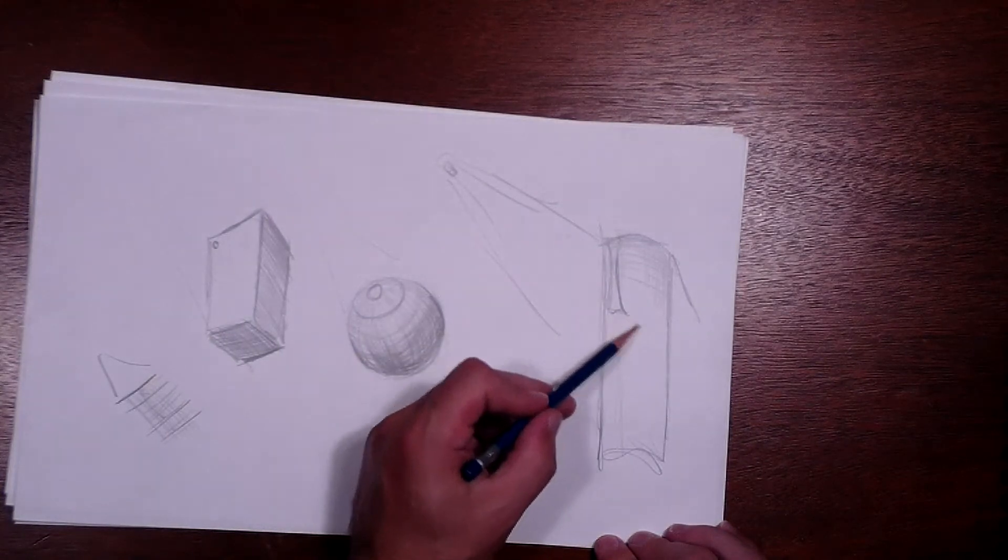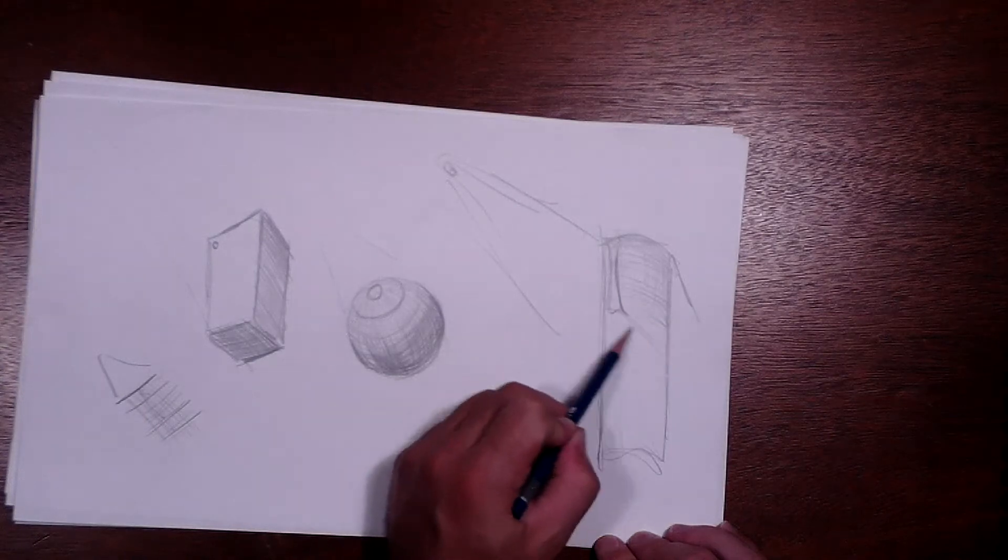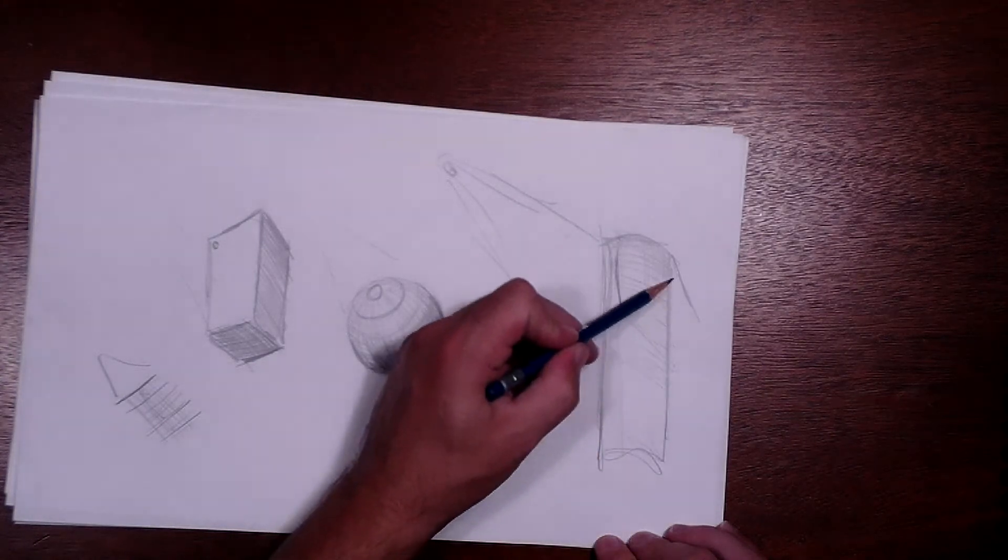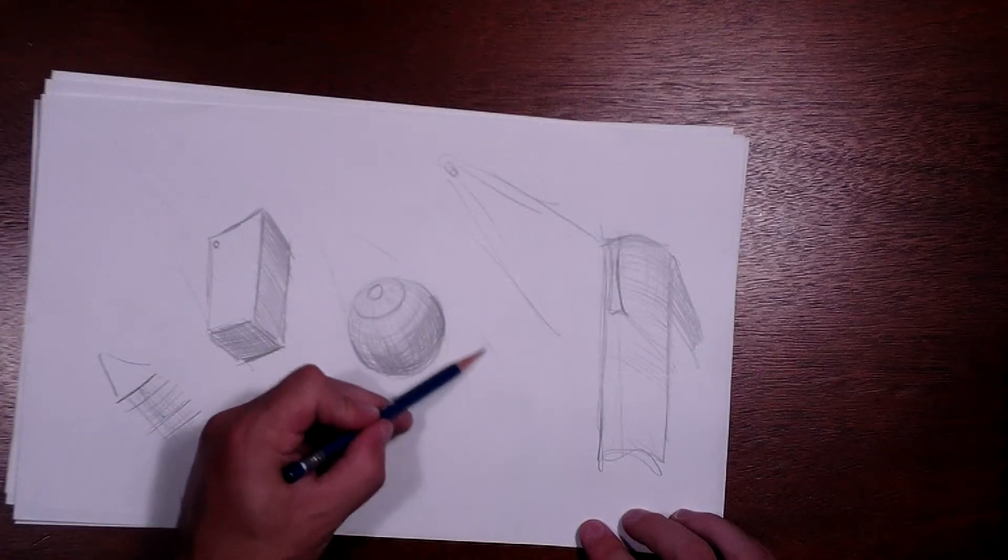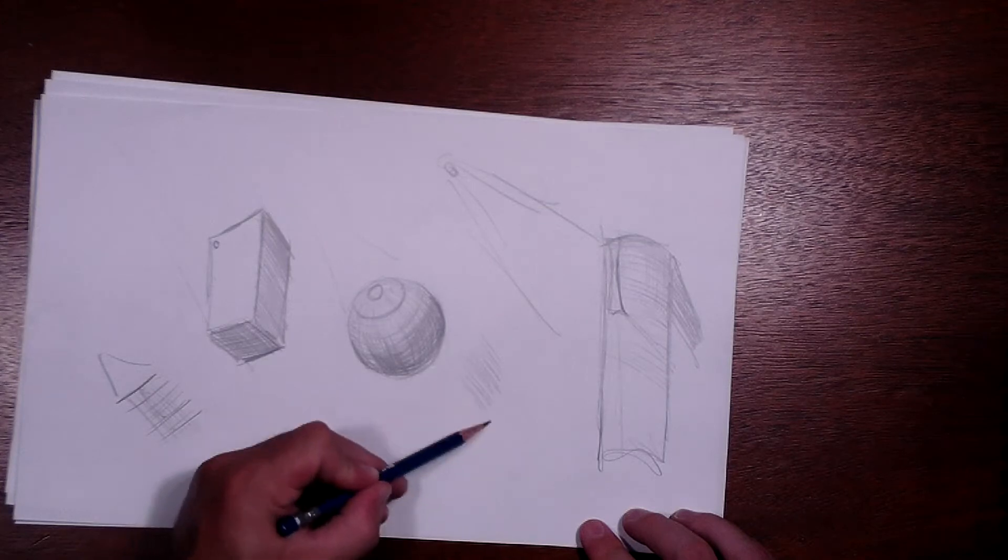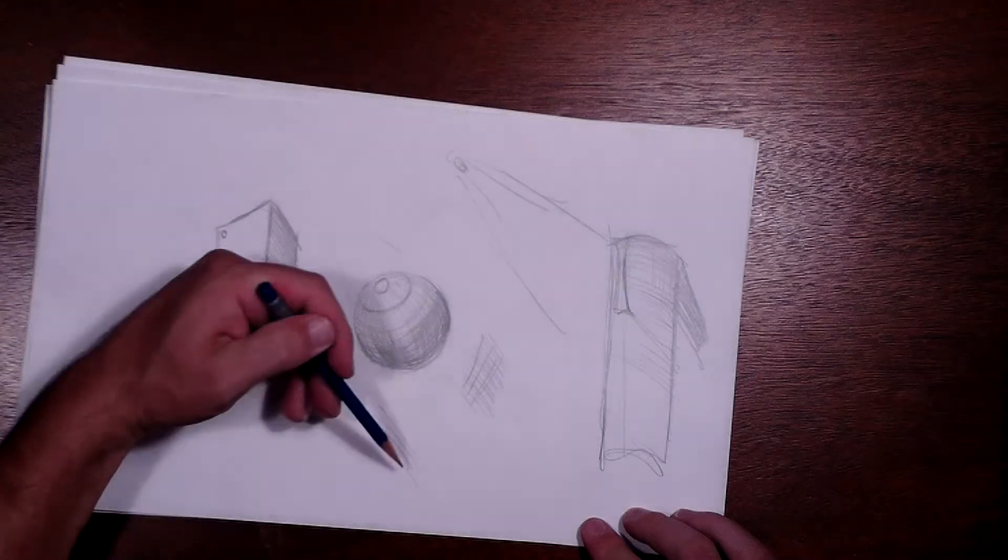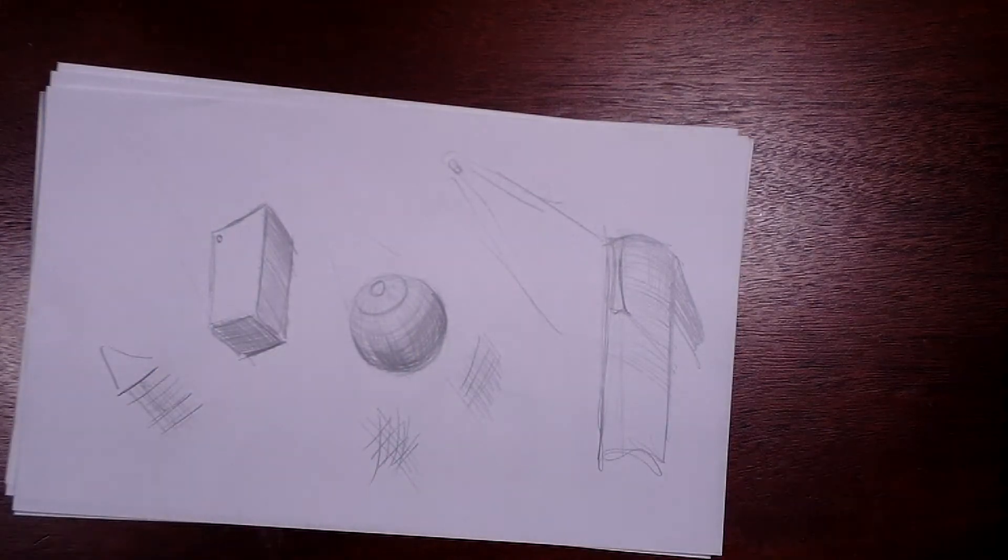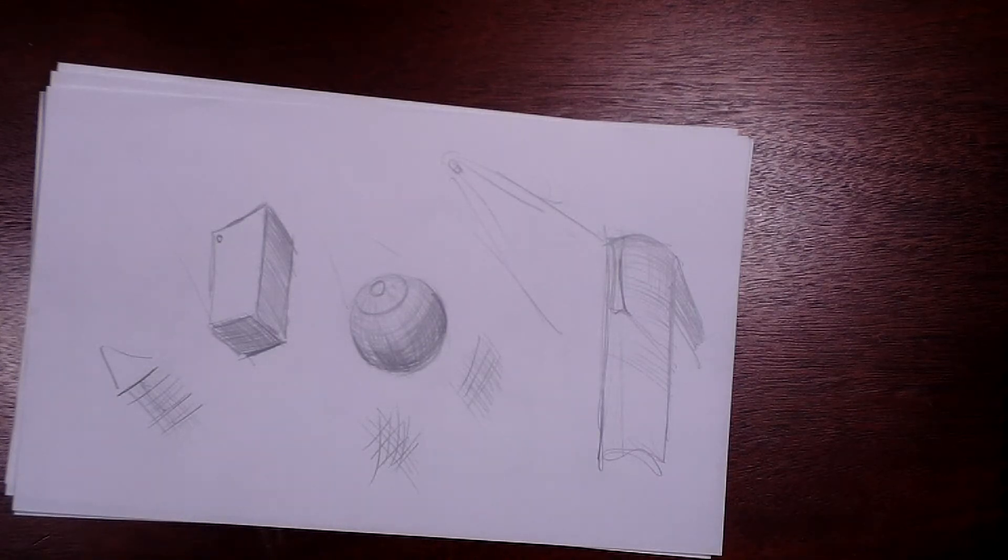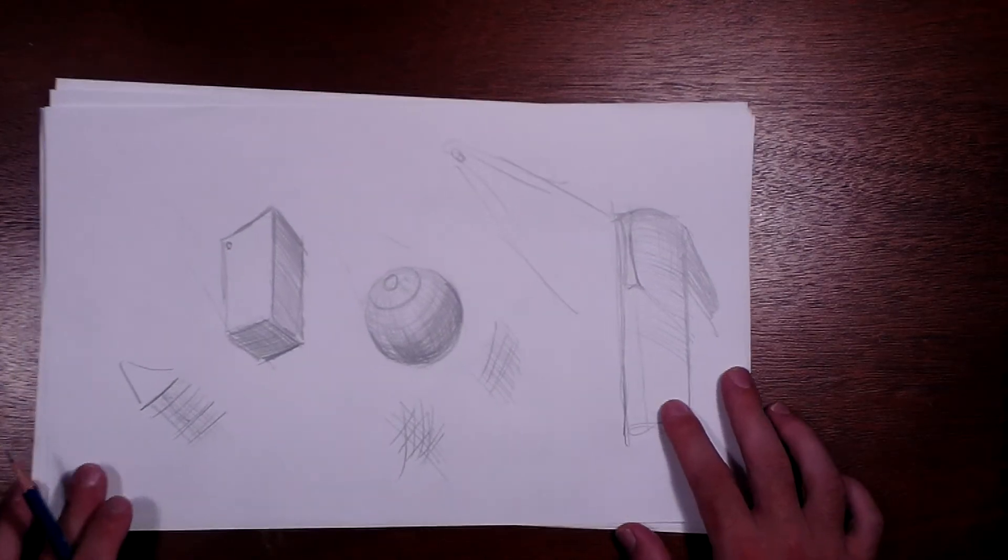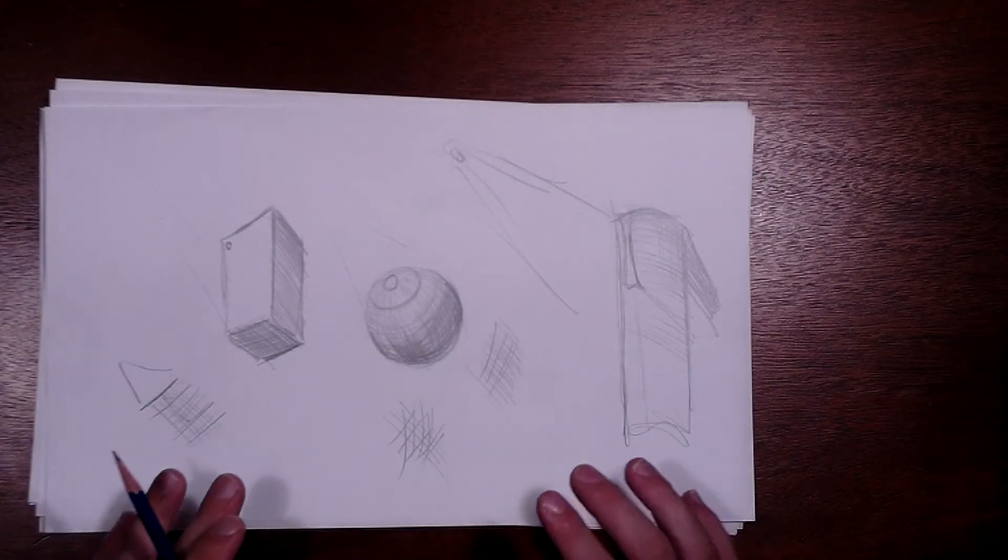But what some people will do is they'll say, okay, everything is being created by just this one line. So then they'll just shade it darker one way. And so when you get an object, everything is hash marked the same way. Some people will cross it. Some people will do more than one or two or three. So it just depends on what you want to do, what style you want to go for. But this is just a very basic and doing shadow.